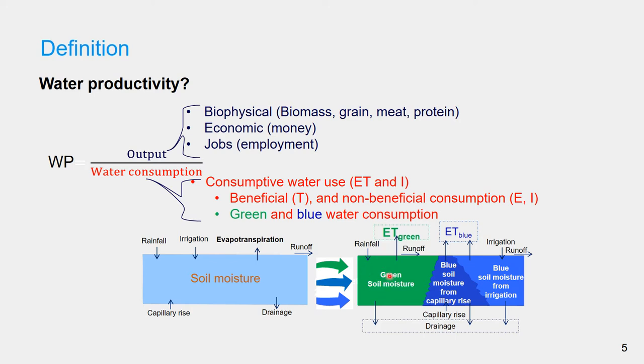The blue water consumption is evapotranspiration from the blue water, which is effective irrigation in the root zone from surface water and groundwater source. If there is shallow groundwater, the fraction of blue water consumption can also take place from capillary water joining the root zone.